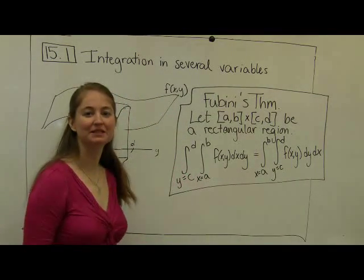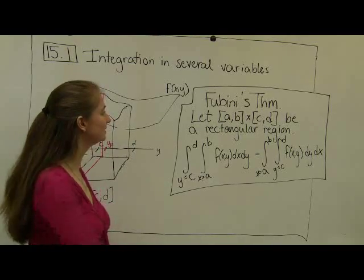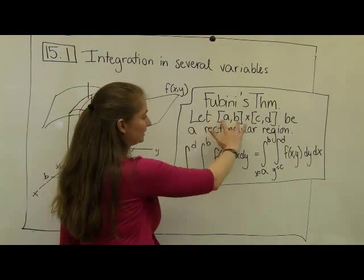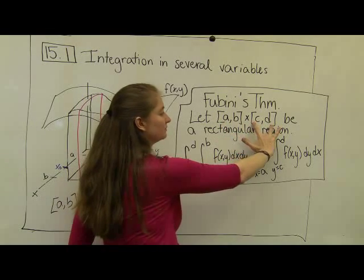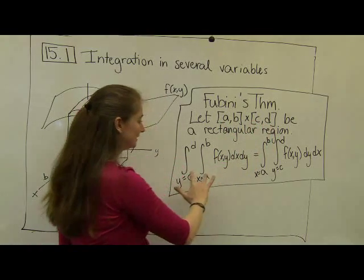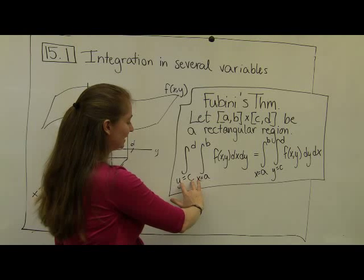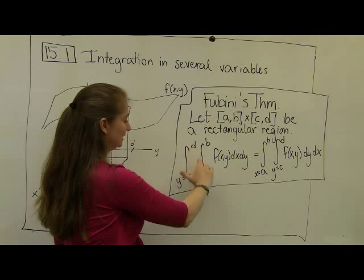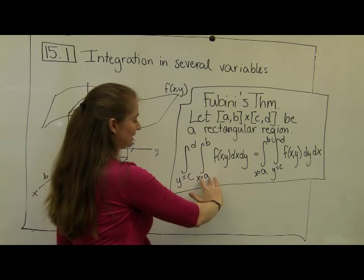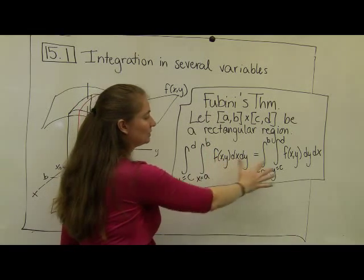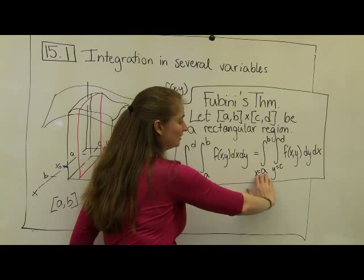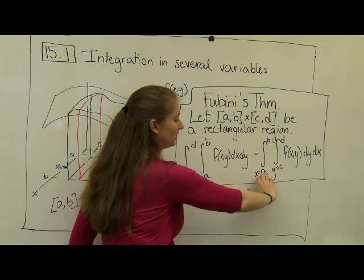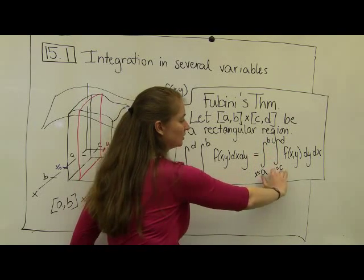So what does Fubini's theorem tell us? Fubini's theorem tells us that if I have a rectangular region where my x's are going from a to b and my y's are going from c to d, then the integral with y on the outside, as y goes from c to d, and then with x on the inside, as x goes from a to b, is going to be exactly equal to the integral where I take the x on the exterior of the double integral, where my x's go from a to b and my y's go from c to d.